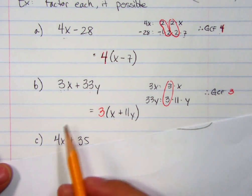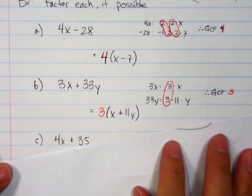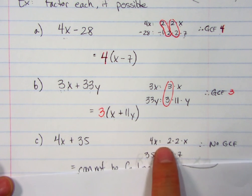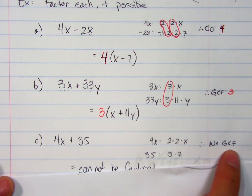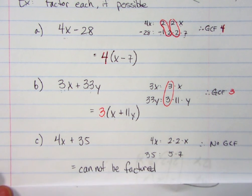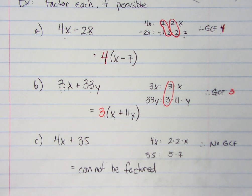Here's the last question I want to show you. 4x plus 35, what do they have in common? Well, they don't have anything in common. 4x is really 2 times 2 times x. 35 is 5 times 7. Nothing in common, so no GCF, therefore cannot be factored. All right, that's it for the video today. If you want some extra examples, there will be a second video.